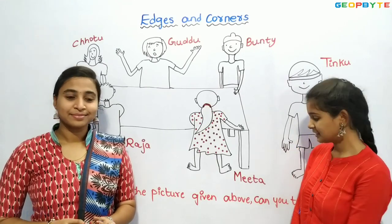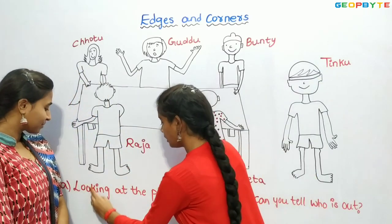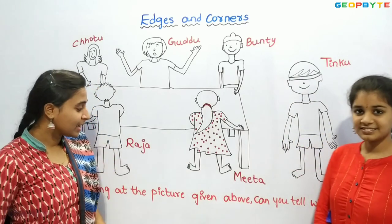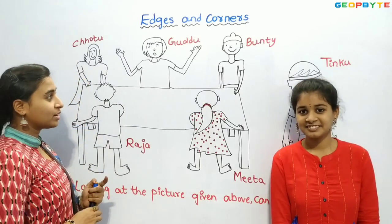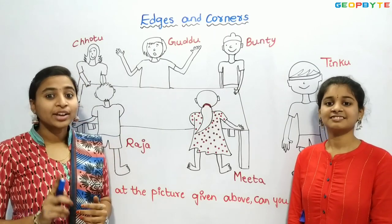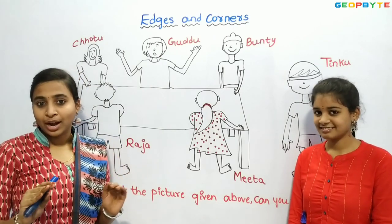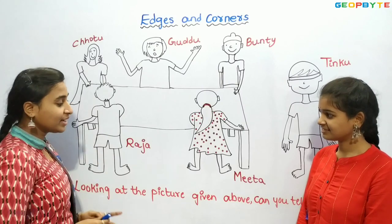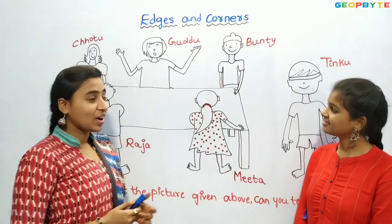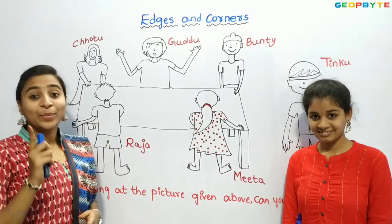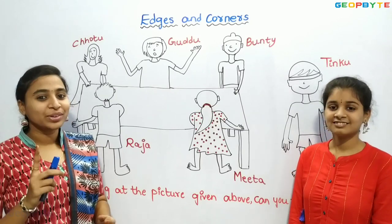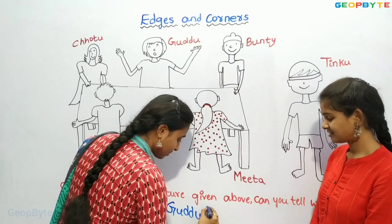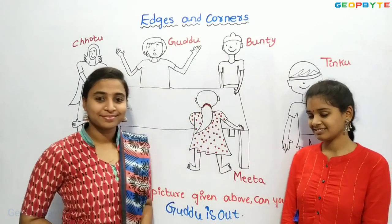Now there is a question here. Looking at the picture given above, can you tell who is out? By looking at the picture we can tell. The child who is at the corner would not be out. Guddu is at the edge. Raja is at the corner, Meeta is at the corner, Banti is at the corner, and Chodu is at the corner. But Guddu is at the edge, so Guddu is out.